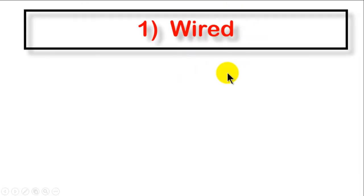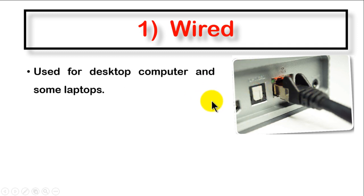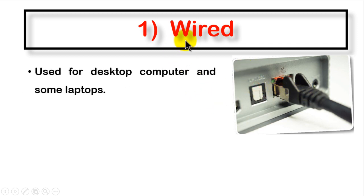We are going to start with the wired connection. You can see in the picture how we connect the network as wired. This is the socket, the NIC — network interface card — inside the device, and the black object is the cable. We plug the cable into the socket and your computer is connected to the network. This wired type is used for desktop computers and some laptops.